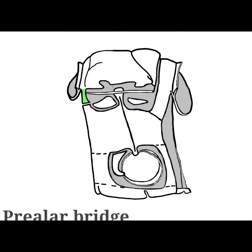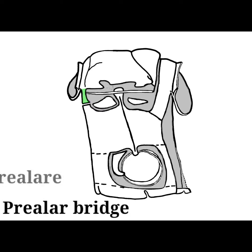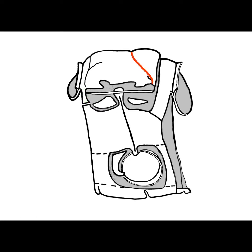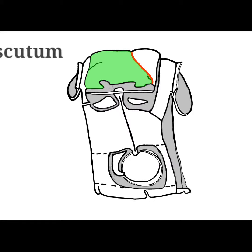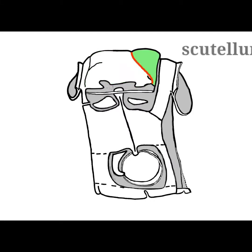The prealar bridge, or the prealare, is a lateral extension of the prescutal area. The scutoscutellar suture divides the rest of the tergum into the anterior scutum and the posterior scutellum.